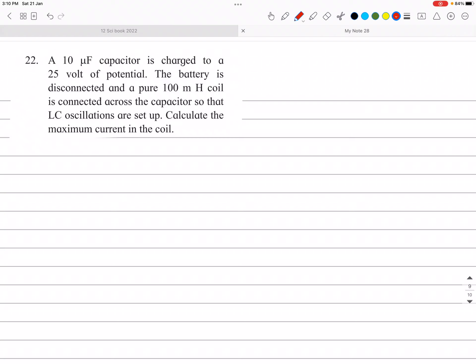Question number or problem number 22 from AC circuit. Let's see the solution of this. So given a 10 microfarad capacitor. So C is 10 microfarad.